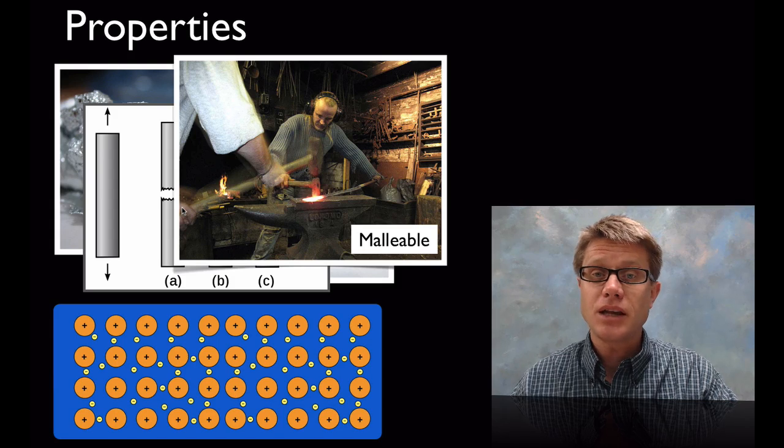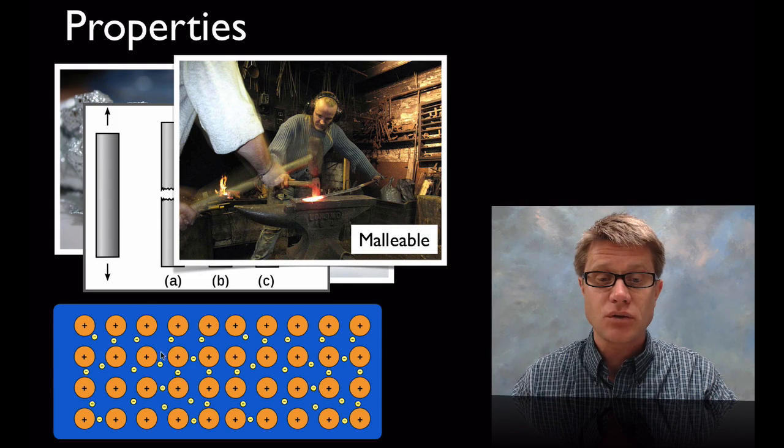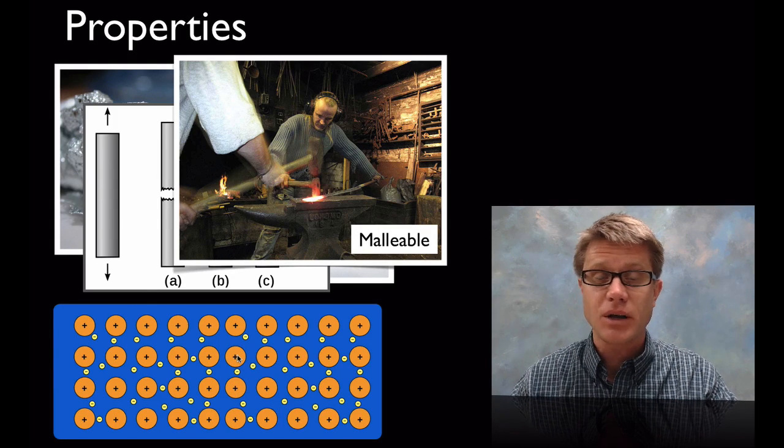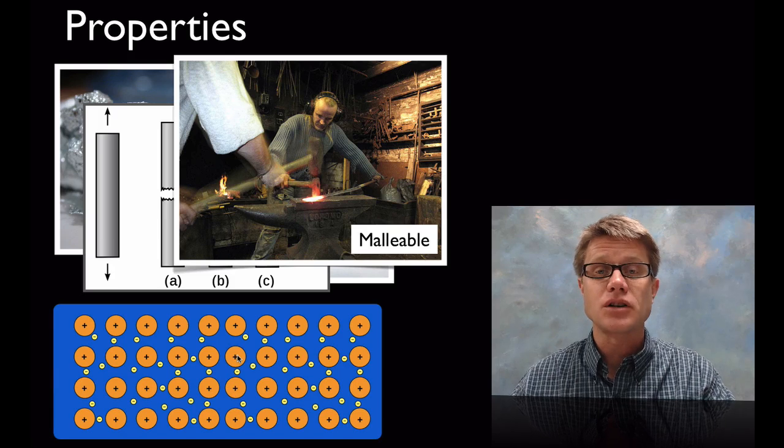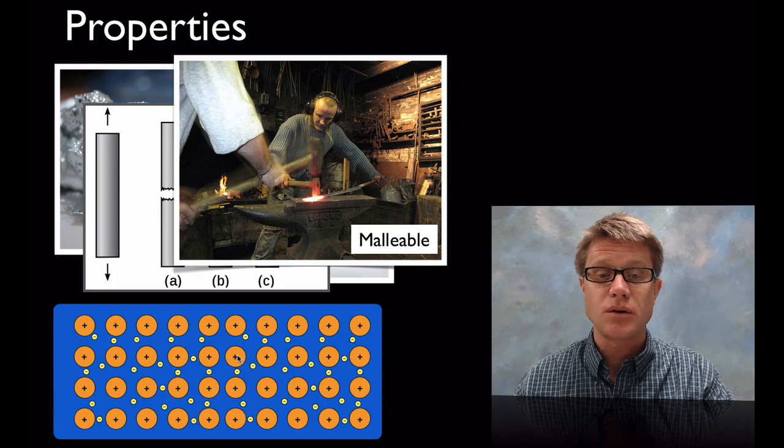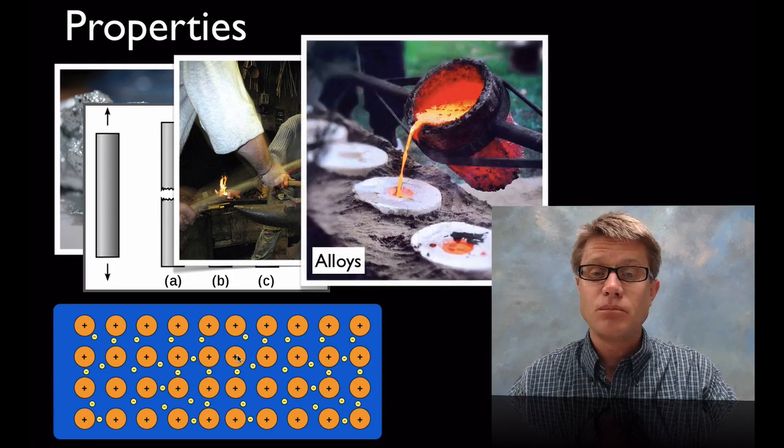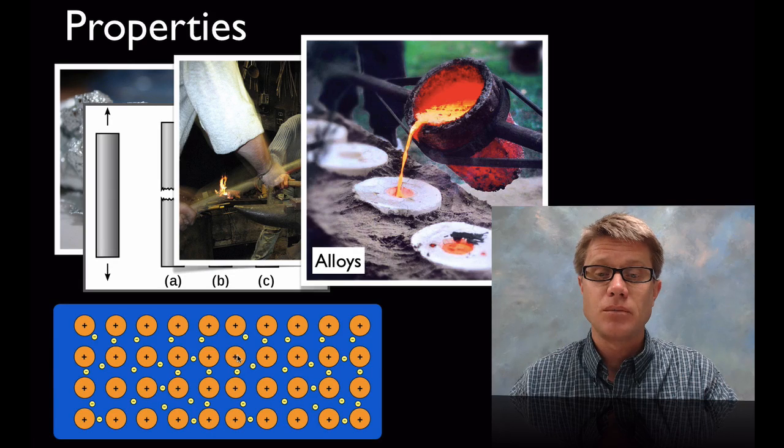They also are malleable. We can hit them and we can smooth them out. And the reason why is you can think of it almost like one big atom with all these positive charges on the inside and electrons holding them where they are. And so these protons have the ability to move. Or these nuclei have the ability to move.